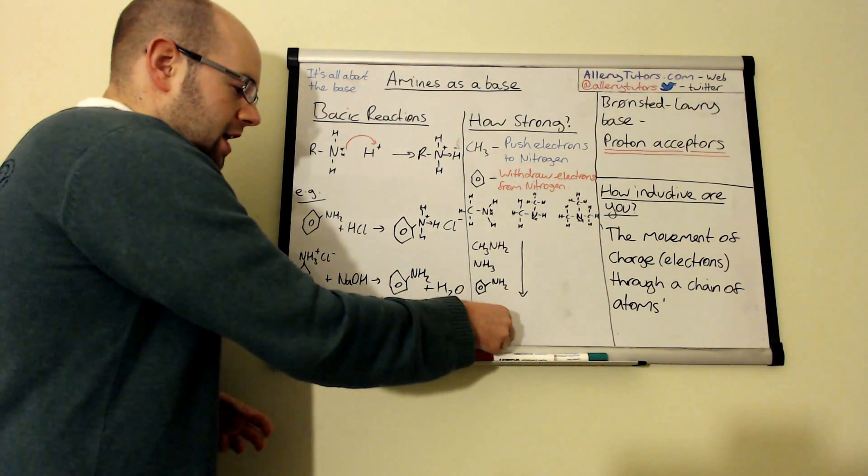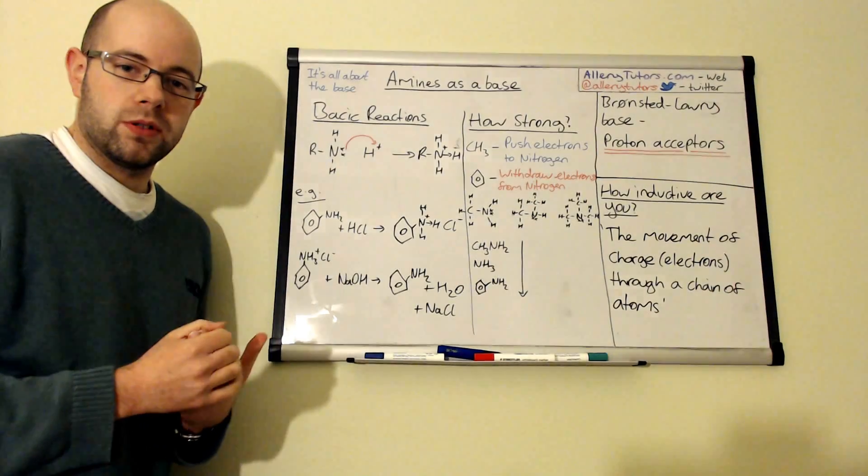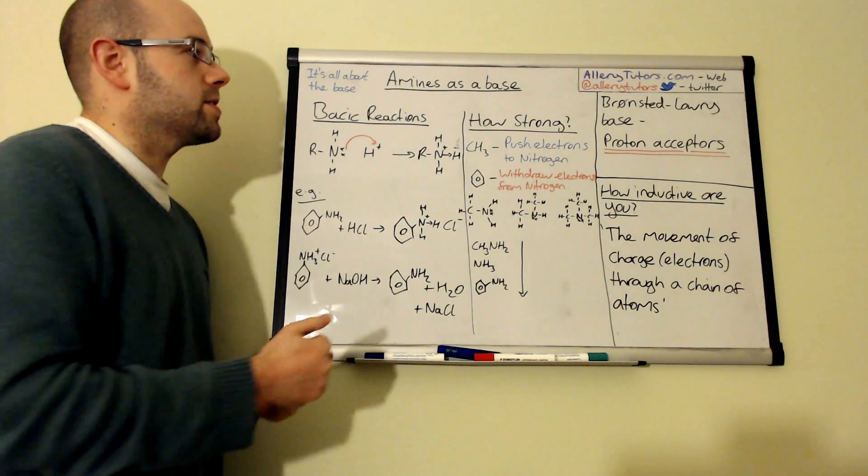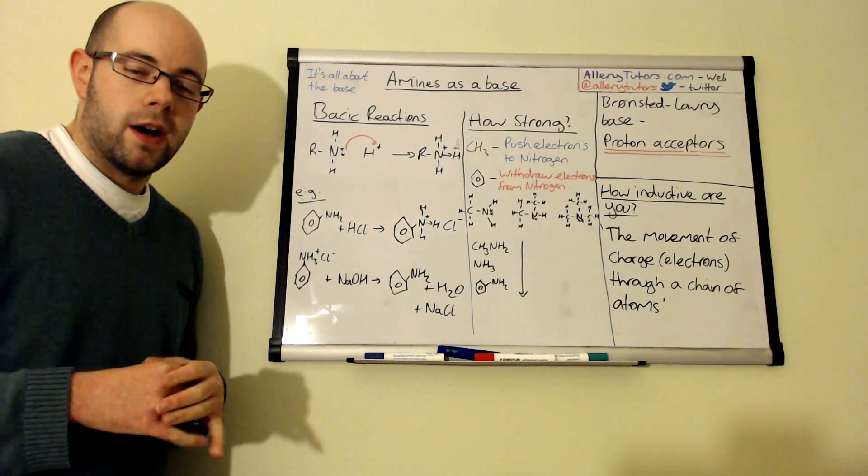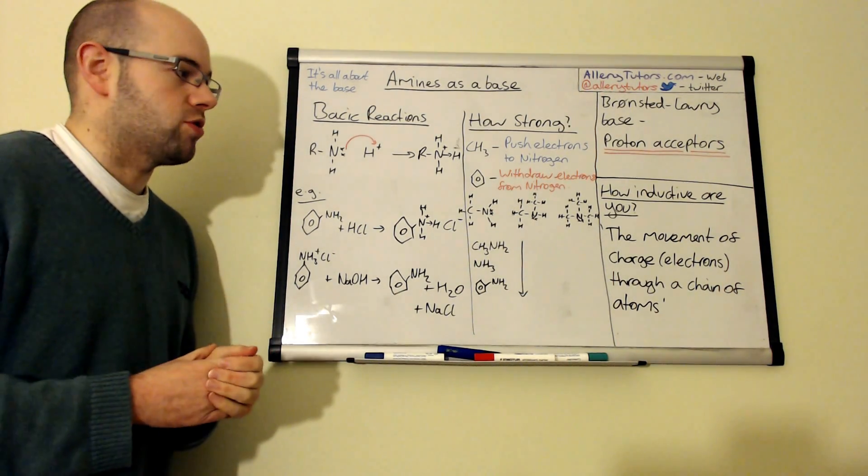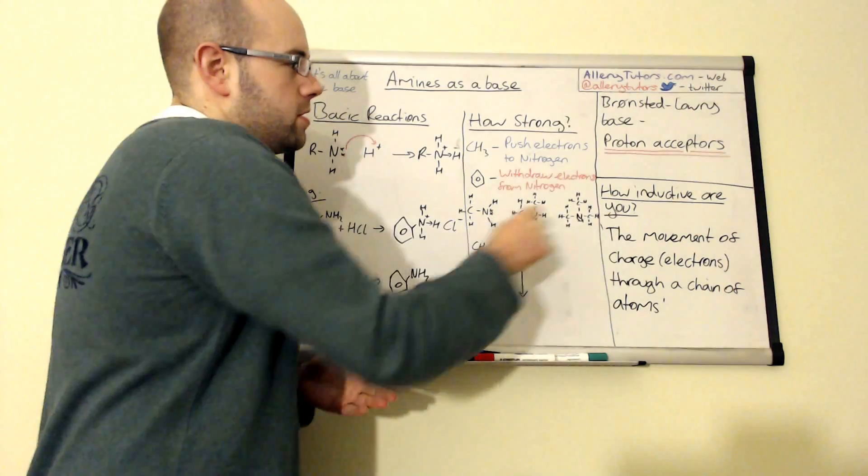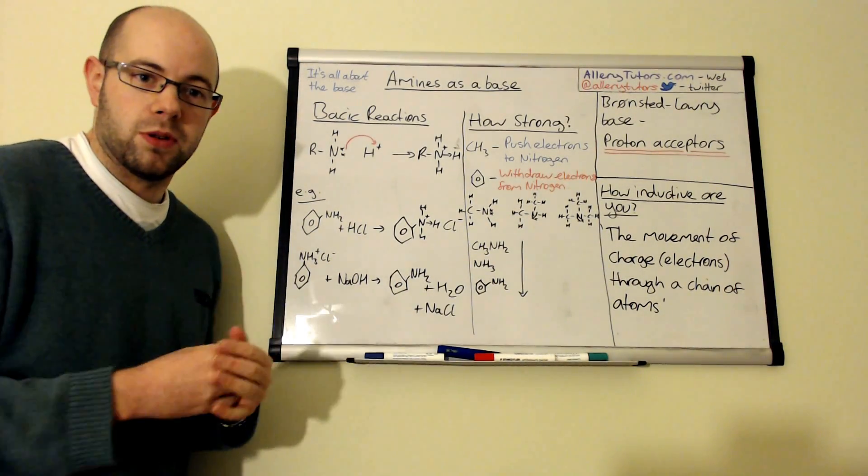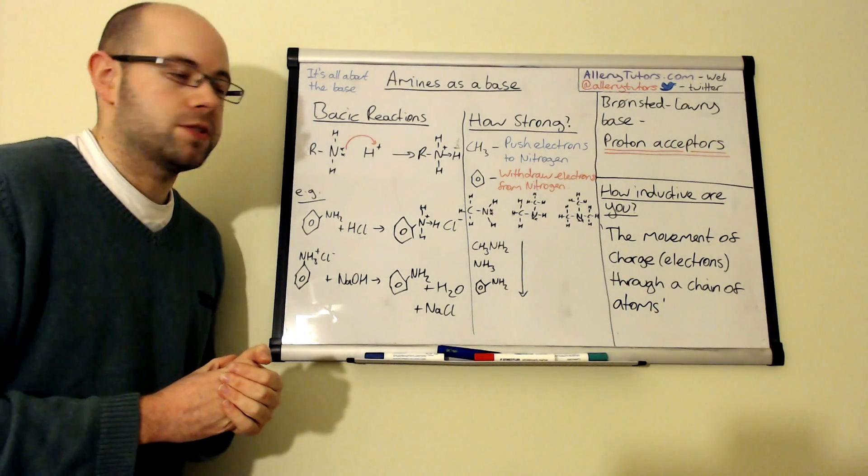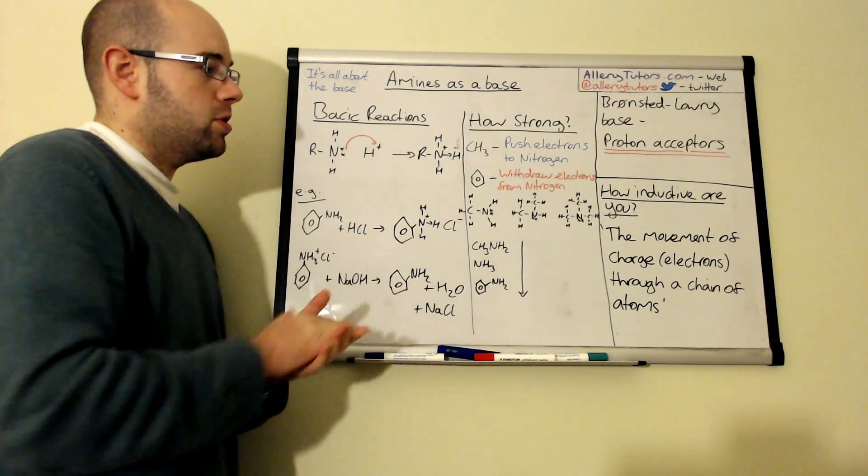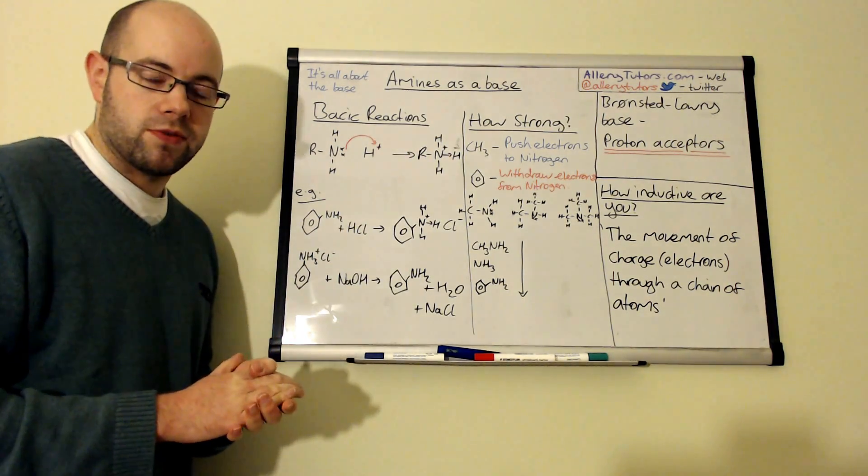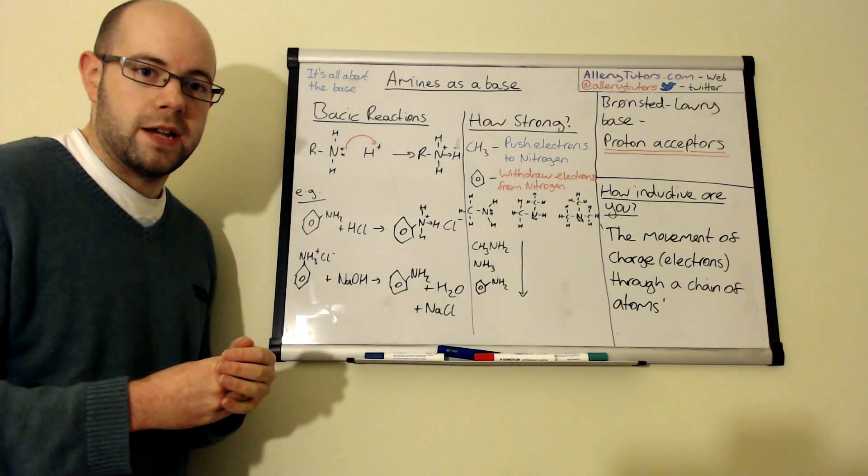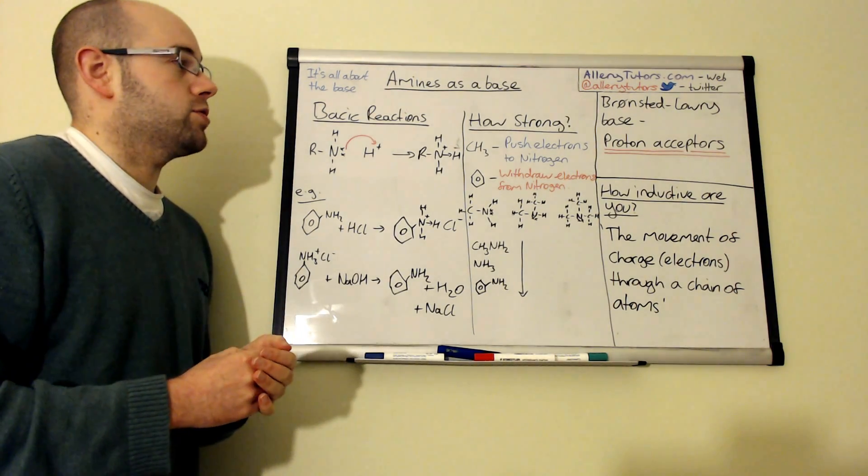Okay so we're going to look at the next thing which is something called an inductive effect and this actually tells us how strong our bases are because some amines are stronger than others. So the inductive effect is effectively the movement of charge, and in this case we're talking about electrons, through a chain of atoms. So we're going to look at the inductive effects of certain groups that could be attached to our amine functional group.